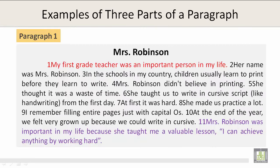Let's take a look at a paragraph about Ms. Robinson, which is the title. This is an example of the three parts of a paragraph: the topic sentence, which is sentence 1; the supporting sentences, which are sentences 2 through 10; and the concluding sentence, which is sentence 11. Let's start with the topic sentence, sentence number 1.